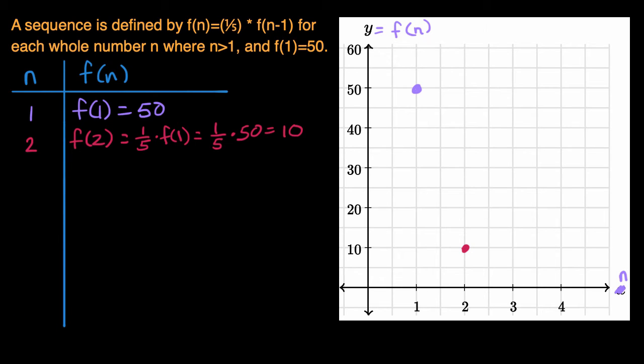And then now let's go to when n is equal to three. f(3), I think you see the pattern here, is equal to one-fifth times f(2). We know what f(2) is, it's 10. So it's equal to one-fifth times 10, which is equal to 2. So when n is equal to three, y equals f(n) is equal to 2, which is right about there.